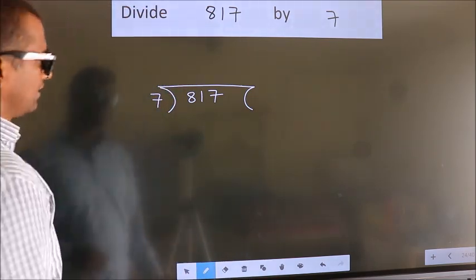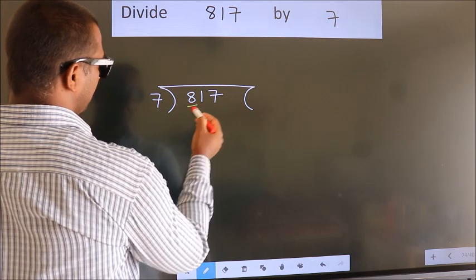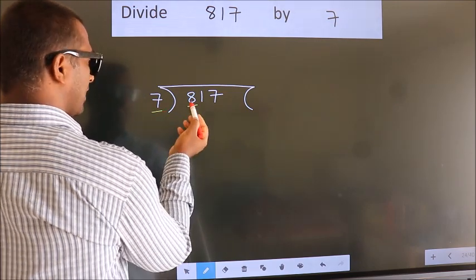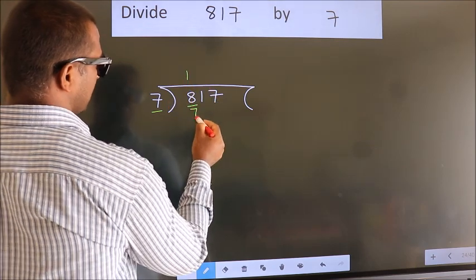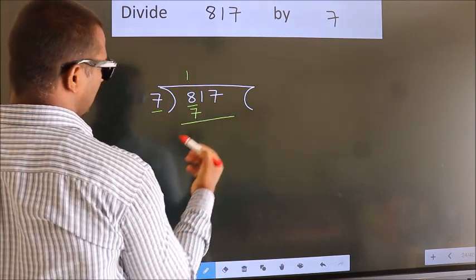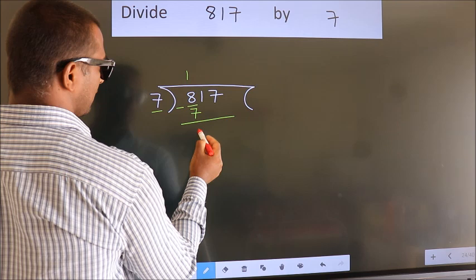Next. Here we have 8, here 7. A number close to 8 in 7 table is 7×1=7. Now we should subtract, we get 1.